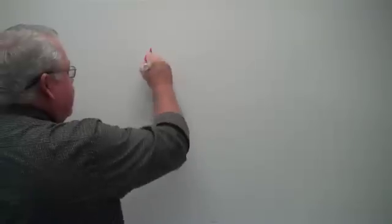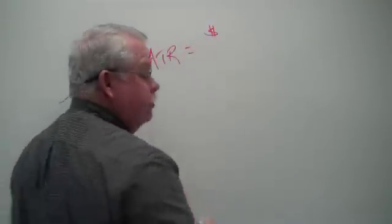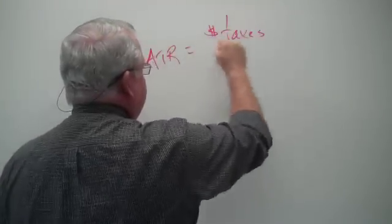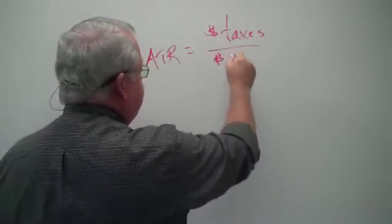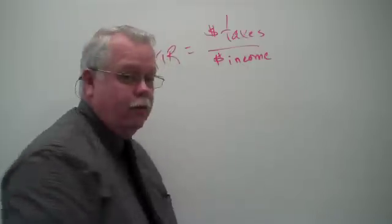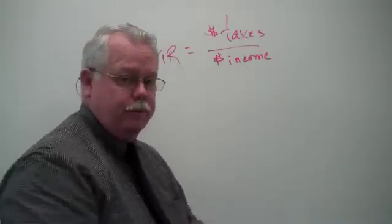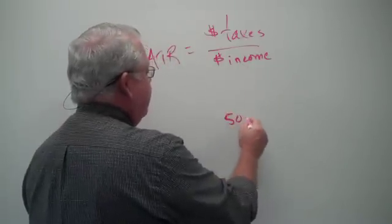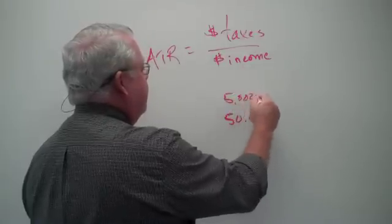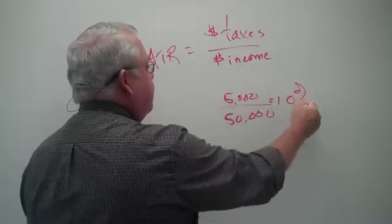Let's have a brief discussion about taxes, and in particular average tax rates and marginal tax rates, so we don't confuse the terminology when we're talking about tax burdens. The average tax rate is calculated by taking the number of dollars of taxes that you pay divided by the number of dollars of income that you earn. For example, if you make $50,000 and you pay $5,000 in taxes, your average tax rate is 10%.